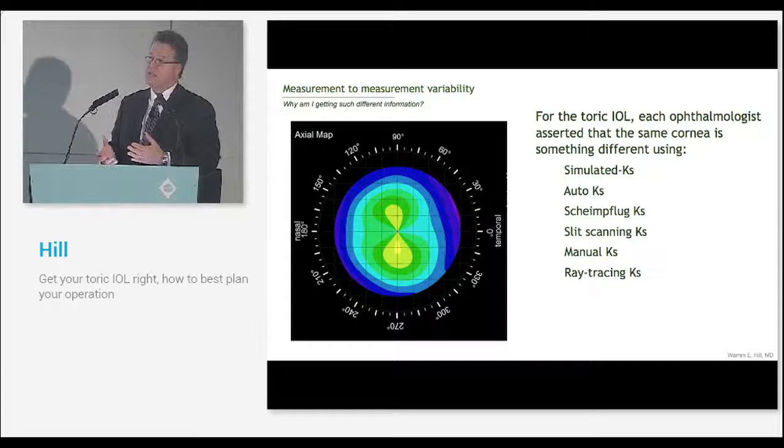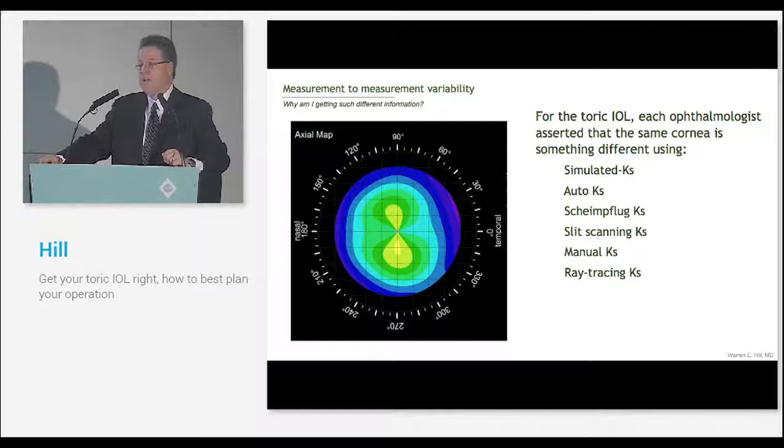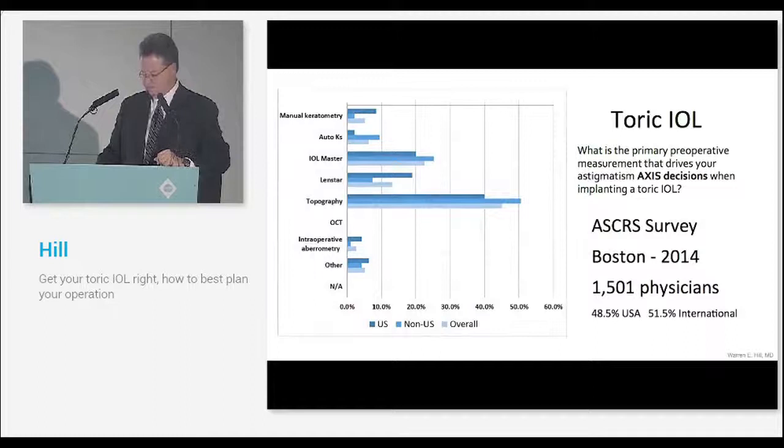What we're doing is we're looking at different parts of the cornea and this is especially true if you have asymmetric and irregular astigmatism. Each one of these devices is true but it's looking at the cornea in a slightly different way.